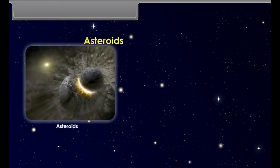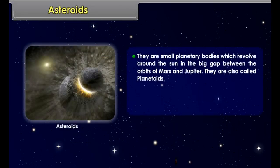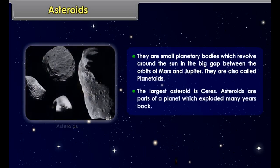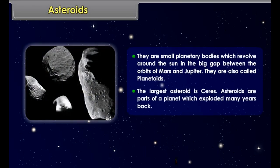Asteroids are small planetary bodies which revolve around the sun in the big gap between the orbits of Mars and Jupiter. They are also called planetoids. The largest asteroid is Ceres. Asteroids are parts of a planet which exploded many years back.